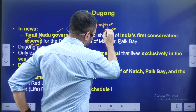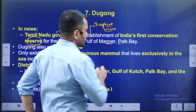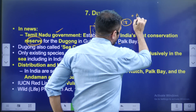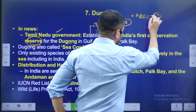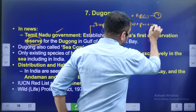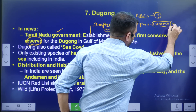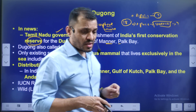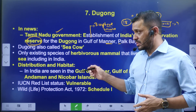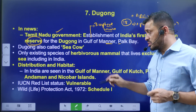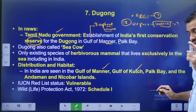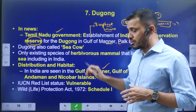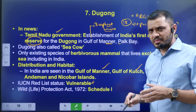Gulf of Mannar is a Biosphere Reserve. In India, the total number of Biosphere Reserves is 18. The Gulf of Mannar is also a UNESCO World Heritage site. It is also located near the Andaman and Nicobar Islands region. The Dugong's IUCN status is Vulnerable.